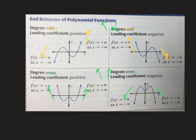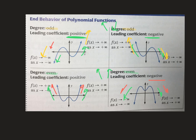If it's odd and the leading coefficient is positive, it goes down left, up right. If it's odd and negative, it goes up left, down right. That's just something you have to remember, but after you do a few of these, you don't even think about it. The even ones are easier: if it's even and positive, they both go up. If even and negative, they both go down. The only one you have to think about is the odd: odd positive, down left, up right; odd negative, up left, down right.